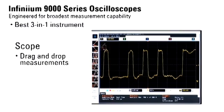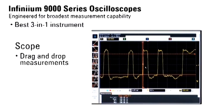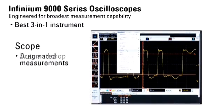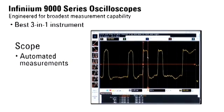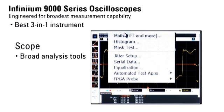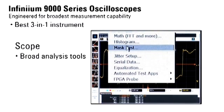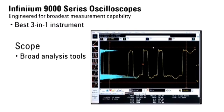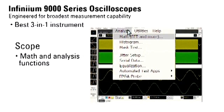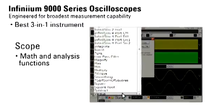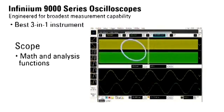Easy-to-use drag and drop measurements enable teams to quickly measure parametric detail. Or choose from a wide set of automated measurements with statistics for voltage, time, and frequency. A broad selection of analysis tools such as jitter analysis, mask testing, and histograms adds to deeper measurement insight. With a mouse click, access a substantial number of built-in math and other analysis functions.